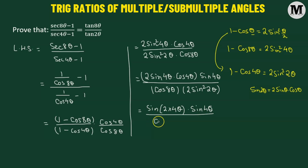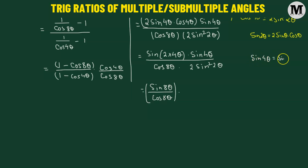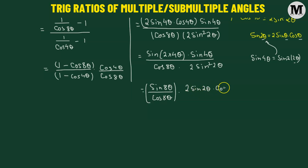This gives us sine 8θ divided by cosine 8θ — which is the tangent function — times sine 4θ, divided by 2 sine squared 2θ. Now sine 4θ can also be expressed as sine of 2 times 2θ. Applying the double angle formula with 2θ, this becomes 2 sine 2θ times cosine 2θ, divided by 2 sine squared 2θ.